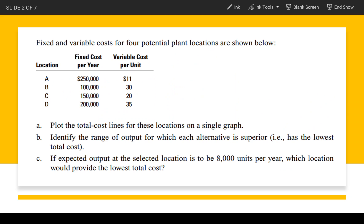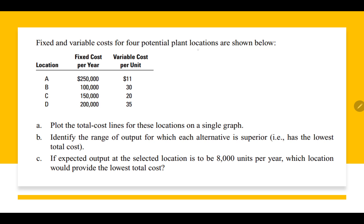Let's suppose this is a particular situation where for any organization, there are four potential plant locations, and the cost of all four locations is given to you. Fixed cost is given, variable cost is given. Fixed cost is going to be fixed in any case — just like a monthly rent, it is not going to change. But variable cost is going to vary, depending upon how many units are going to be produced at that particular site.